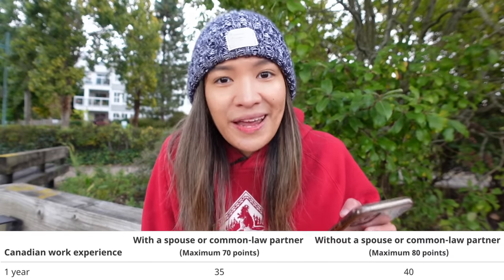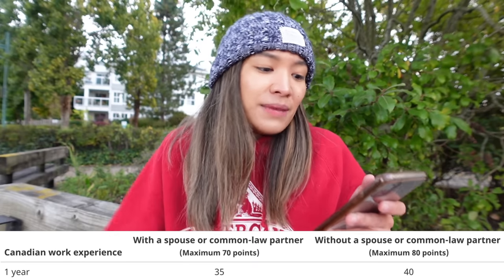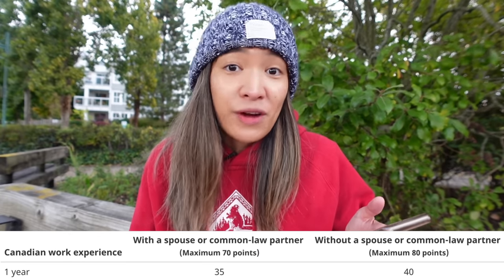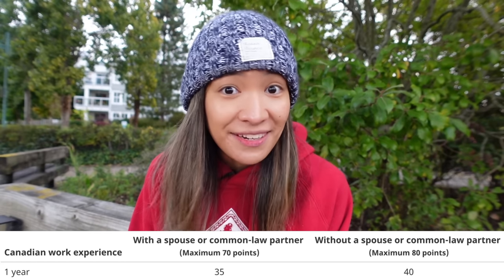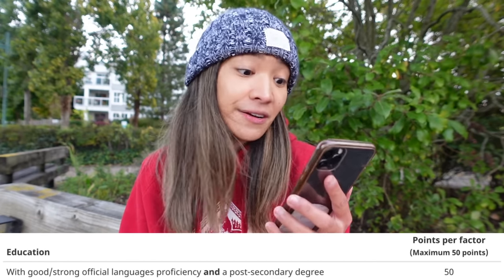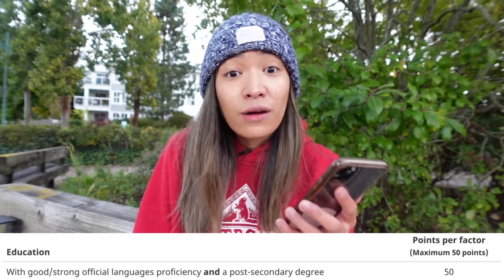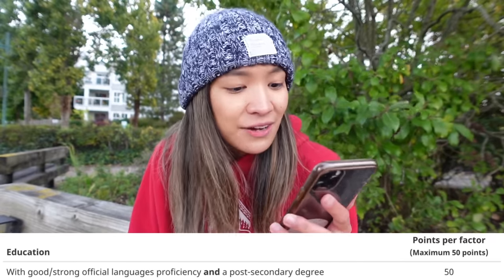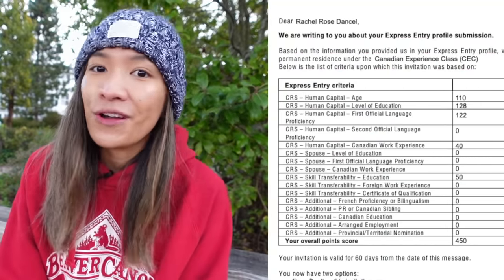Next, I also got 40 points on my Canadian work experience. Immediately after I completed my studies and applied for a postgrad work permit, I was very fortunate to land a skilled job here in Canada. The timing was just impeccable, as I was able to fully maximize my one-year postgrad work permit working a skilled job that later helped me qualify for CEC and FSW. Last but not least, I also gained 50 points on the skills transferability education criteria, by having strong official language proficiency and a post-secondary degree. So if we add it all together, my total CRS score was 450 points.